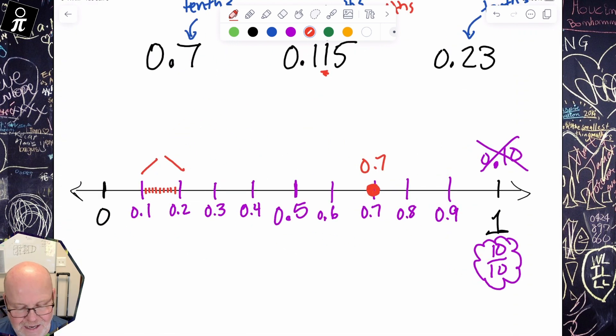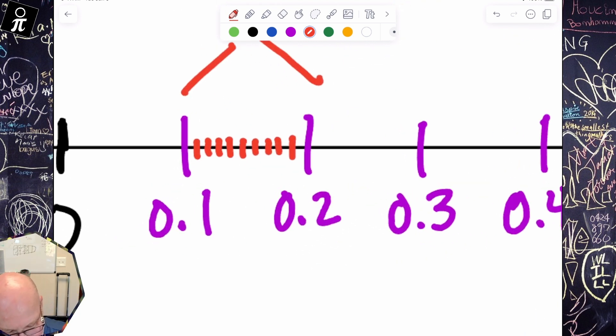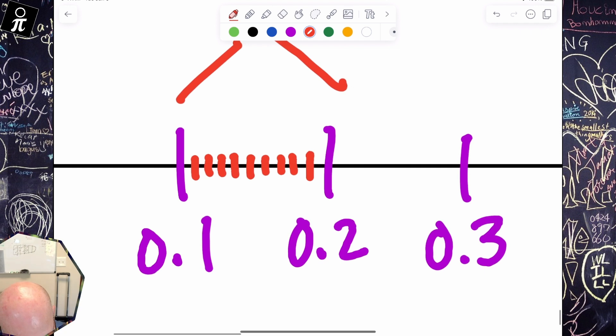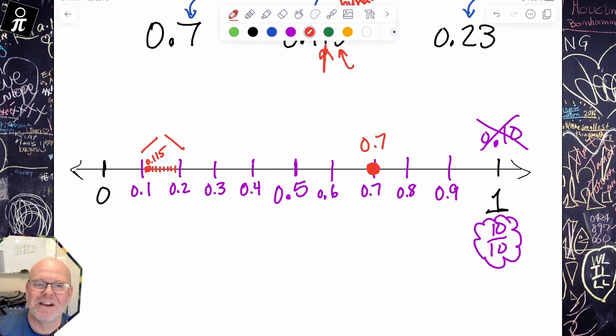And that one right here means we need to move over one of those pieces. And then the five means we're supposed to move over half of the next one. Oh my goodness. So there is right here is my 0.11 and then we need to move over half. So 0.115 is right about there. That is just crazy right there.